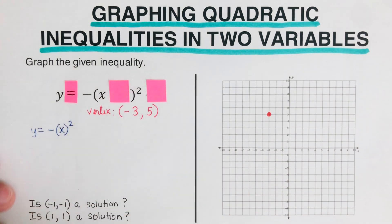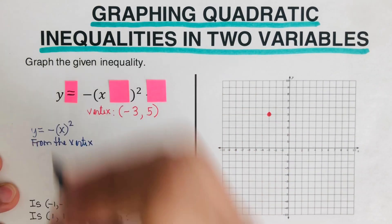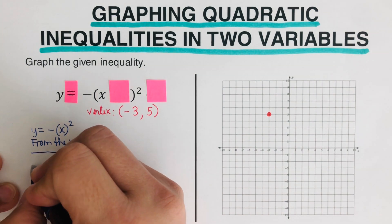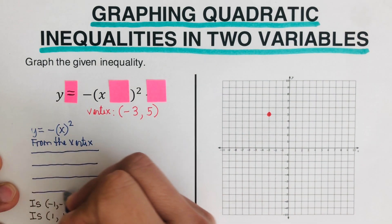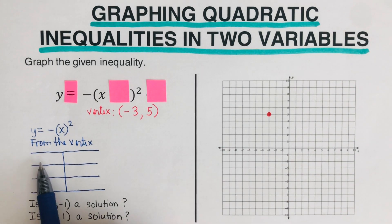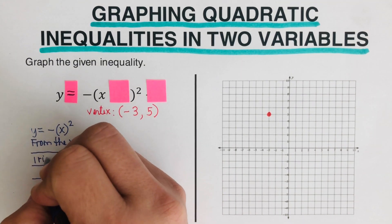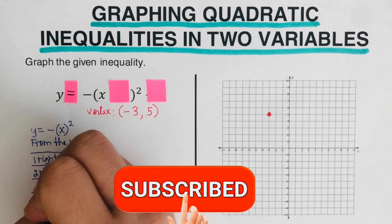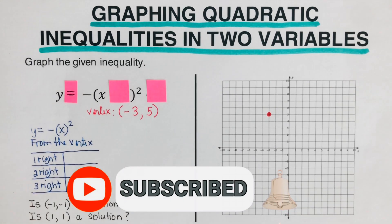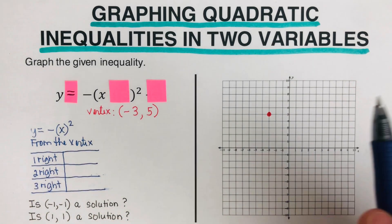Now we create a table. From the vertex, we create a three-row, two-column table. We write 1, 2, and 3 in the table — these represent how many steps we move to the right from the vertex. We then figure out whether to go up or down to reach the next dot.